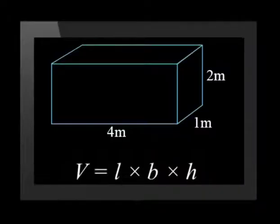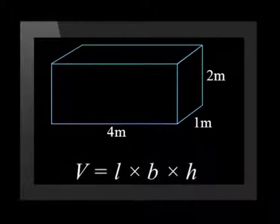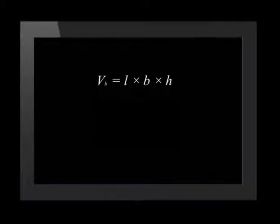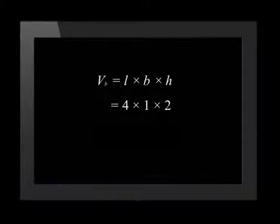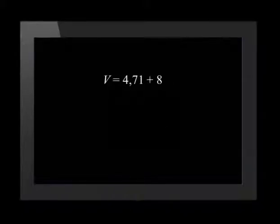For the rectangular prism or box, we can use any of the rectangular faces as the base. Substituting in the given values, we get the volume equal to 4 times 1 times 2, and this is equal to 8 cubic meters. So the total volume of this figure is equal to 4.71 plus 8, which equals 12.71 cubic meters.